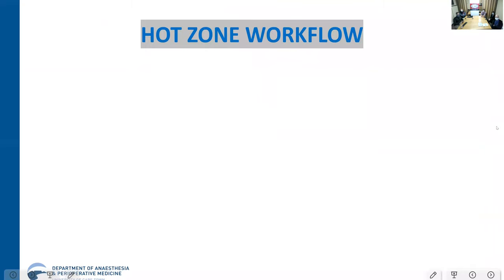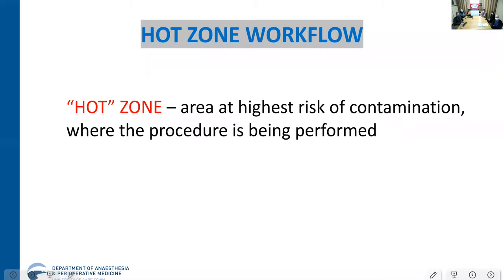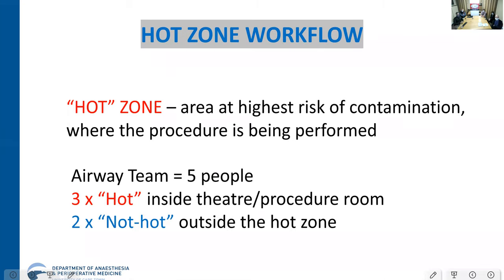Just to give an idea of how our workflow works: we have a hot zone, which is where the procedure is being performed — either the room or the immediate vicinity in a ward. We have an airway team of five people: three in the hot room and two not hot. A lot of people say this isn't achievable — they don't have five people for every intubation. But in a theater environment, you always have an anesthetist, an anesthetic nurse, a surgeon, a scrub nurse, and a floor nurse. An anesthetist makes a great hot one putting the tube in; an anesthetic nurse is a great hot two as airway assistant; a surgeon can be trained to give drugs and watch the monitor; a scrub nurse is excellent as the doorkeeper; and a floor nurse is a great runner.